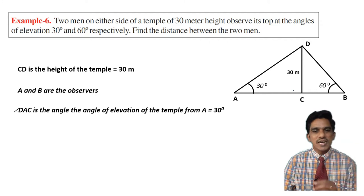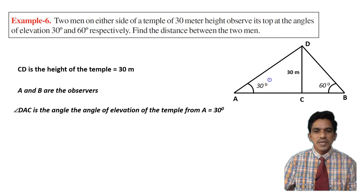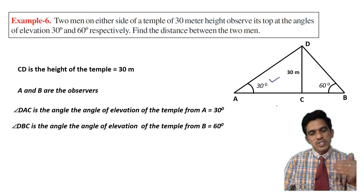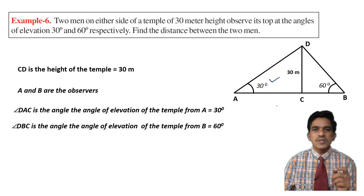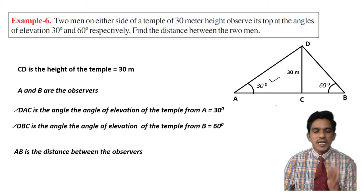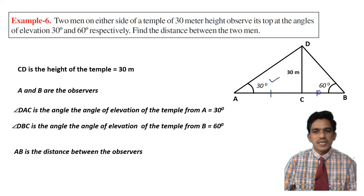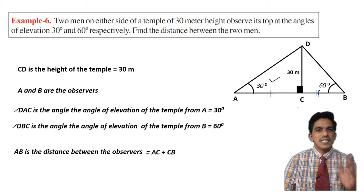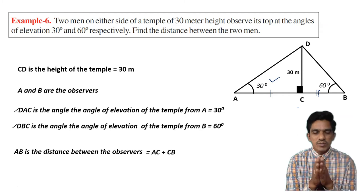Angle DAC is the angle of elevation of the temple from A, which is 30 degrees. Angle DBC is the angle of elevation of the temple from B, which is 60 degrees. We have to calculate the distance between A and B. The distance AB is divided into two parts: AC and CB.